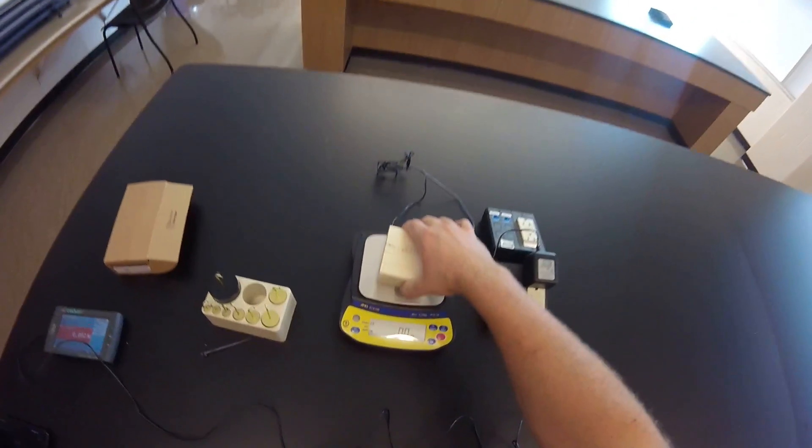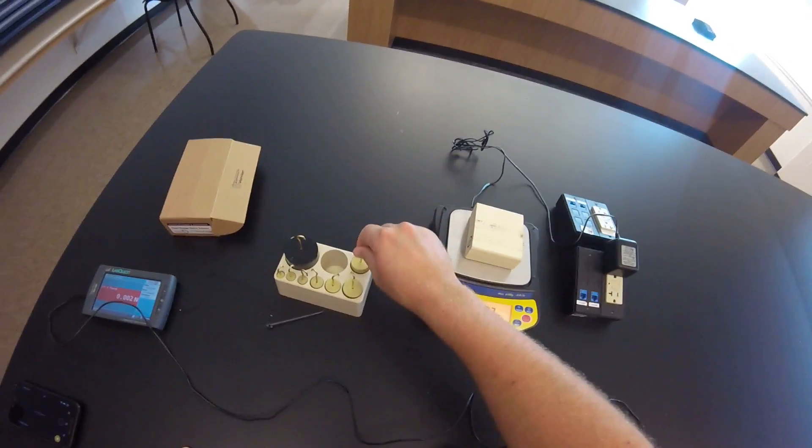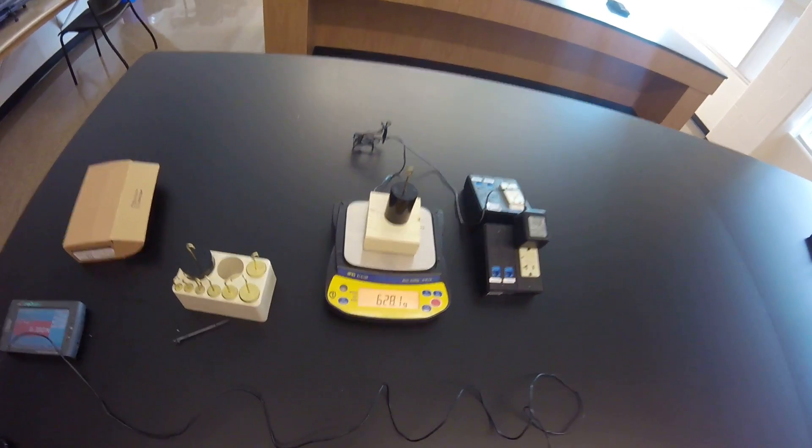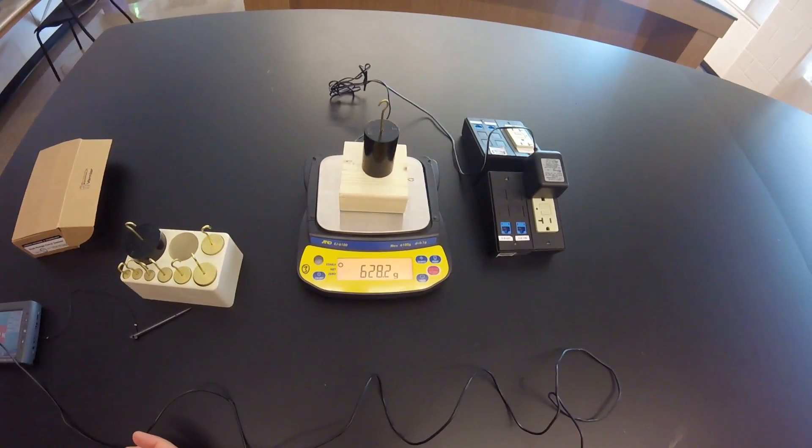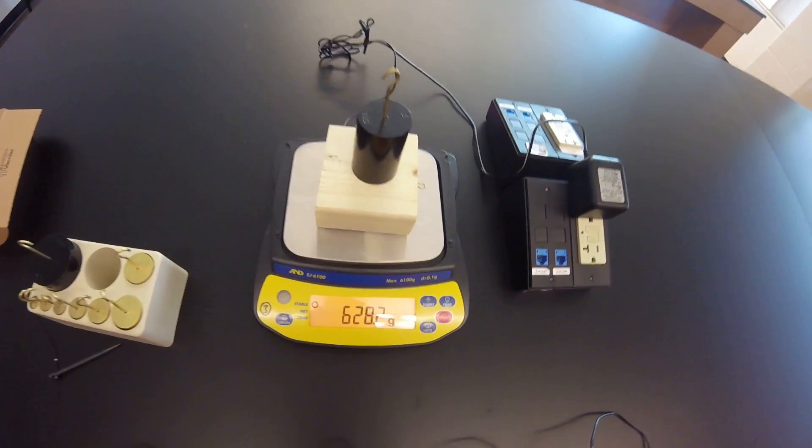So this lab is pretty simple, we have to mass our block, and then to it, we're going to be adding more mass. So here's 500 grams, so altogether, the mass for this demonstration is going to be 628 grams, or 0.628 kilograms.